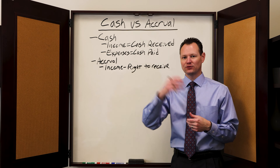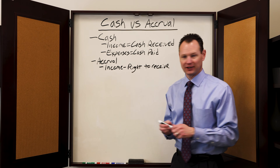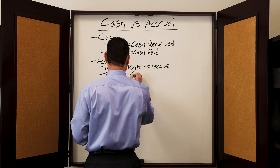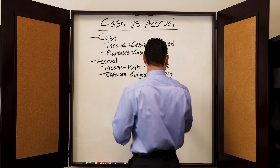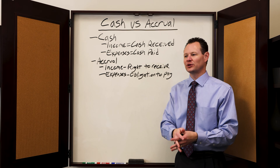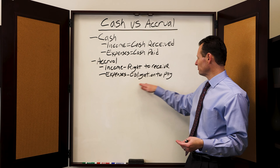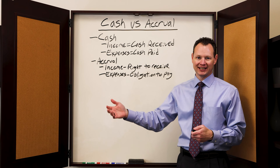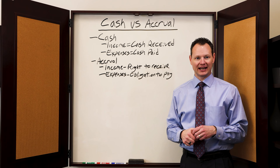So under the accrual method, whenever you invoice a client or a customer, you recognize income at that point, even though you haven't received the cash yet. As for expenses, they are recognized when you have an obligation to pay. For example, if you receive a legal invoice from an attorney, you haven't paid it yet, but you have an obligation to pay — that is when you recognize the expense and record an accounts payable.